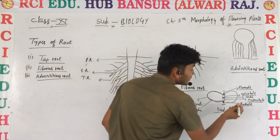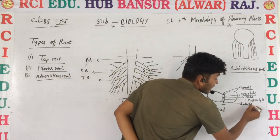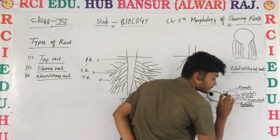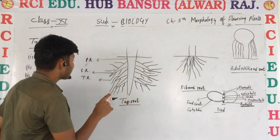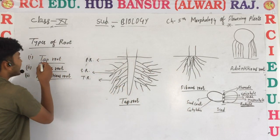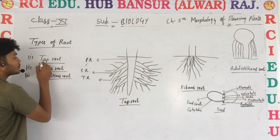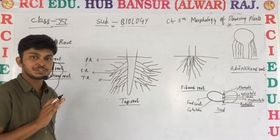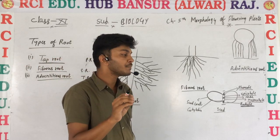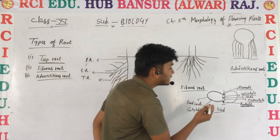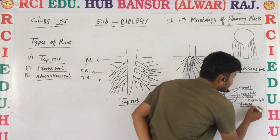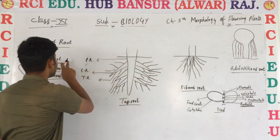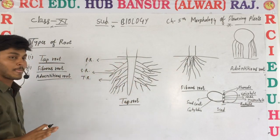If the roots are forming by the radical, those roots are known as tap roots. Roots whose formation takes place from the radical part of the seed — those roots are known as tap roots.